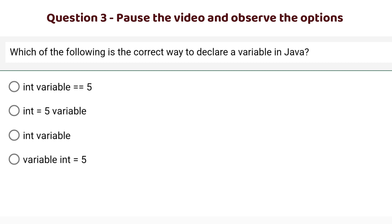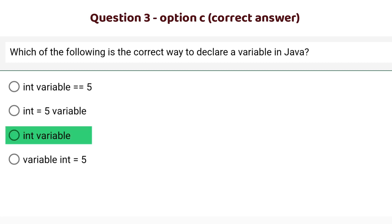The correct option is option number c: int variable. Try all these options in the code you are using and you will find an error in option a, option b, and option d, but in option c you will not find error if you try it. Just a slight mistake is there: there will be a semicolon after the variable for each one.